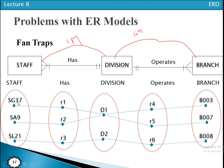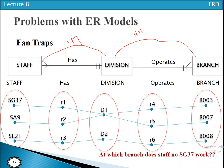We also have staff members SG37, SC9, and SL21. Division D1 has two branches B3 and B7, while division D2 has branch B8. That is the one-to-many relationship fanned out from divisions. For the second one-to-many relationship, division D1 has staff SG37 and SA49, and D2 has SL21. Now a relationship exists between the entity types, but the question is: at which branch does staff member ST37 work?